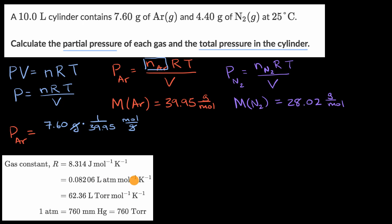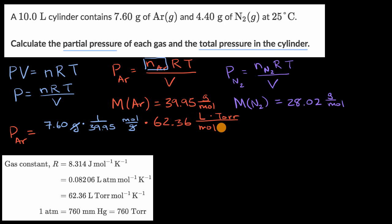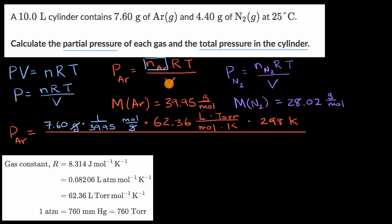We have to pick which ideal gas constant to use. Since we're dealing with liters, both options apply, but the difference is in pressure units — the first is in atmospheres, the second is in torr. If we want our partial and total pressures in torr, we use R = 62.36 liter·torr per mole·kelvin. We also multiply by the temperature: 25 degrees Celsius plus 273 equals 298 kelvin. All of that is divided by the volume, 10.0 liters.